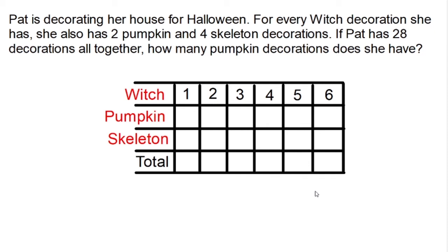In this table we have four rows. It's going to keep track of the number of witch decorations, the number of pumpkin decorations, the number of skeleton decorations, as well as the total decorations. For every witch decoration she has, she also has 2 pumpkin and 4 skeleton decorations. If Pat has 28 decorations altogether, how many pumpkin decorations does she have? Hit pause, do your best to solve the problem, and when you think you've got it, hit play.